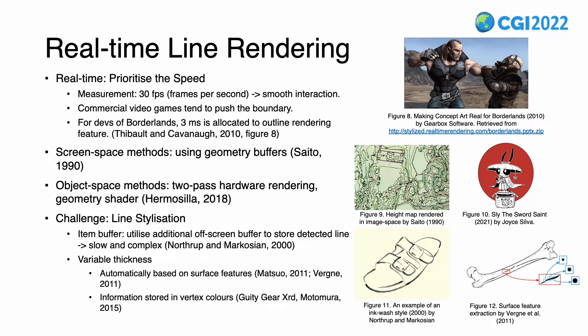One major challenge for any of these methods in real-time line rendering is how to control the stylization of the line. A technique that circumvents this problem is the atom buffer, which uses an additional off-screen buffer to store detected lines. However, the downside is that since it runs on CPU, the process can be slow and complex. Other efforts focus on controlling variable line thickness — some research developed algorithms based on surface features, while the developer of Guilty Gear gave artists control by storing thickness information in vertex color.